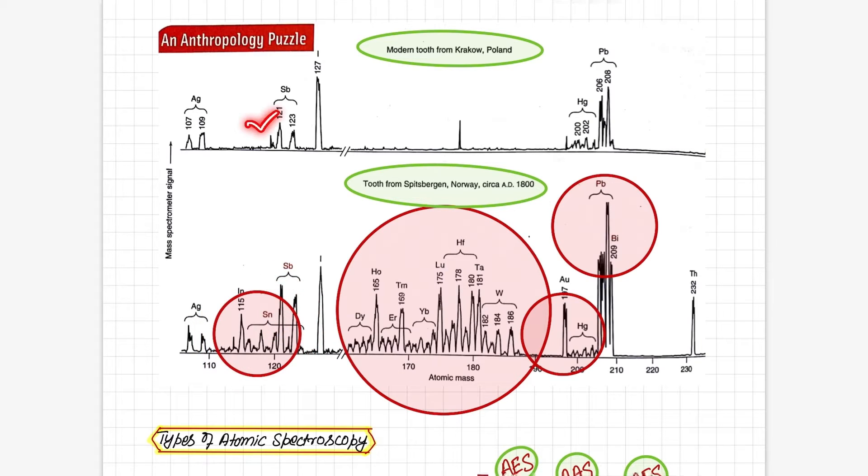Whereas the modern tooth has nothing here. The reason is that in the previous era, people used to eat and drink in earthen vessels or pottery utensils, so those elements were present in the tooth through food consumption. Similarly, if you see tin, its concentration is also there in the old tooth, but modern tooth does not have tin. This elemental profile shows the difference between 1880s teeth and present day teeth. In this way, analytical chemistry solves such problems in every field and provides solutions.